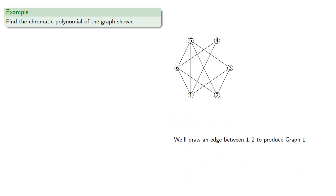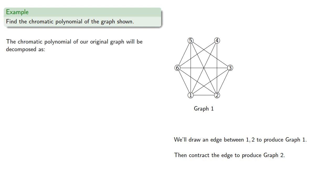So let's start by drawing an edge between vertices 1 and 2 to produce graph 1, and then we'll contract the graph to produce graph 2. The chromatic polynomial of our original graph will be the chromatic polynomial of graph 1 plus the chromatic polynomial of graph 2, which we form by contracting the edge.